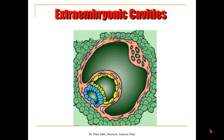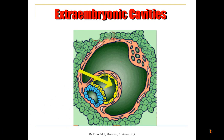Now, the primary yolk sac will change its name to secondary yolk sac. You can see that we have three cavities that lie outside the embryo: the amniotic cavity lies dorsal to the embryonic disc, the secondary yolk sac lies ventral, and the extra-embryonic coelom is the outermost one.